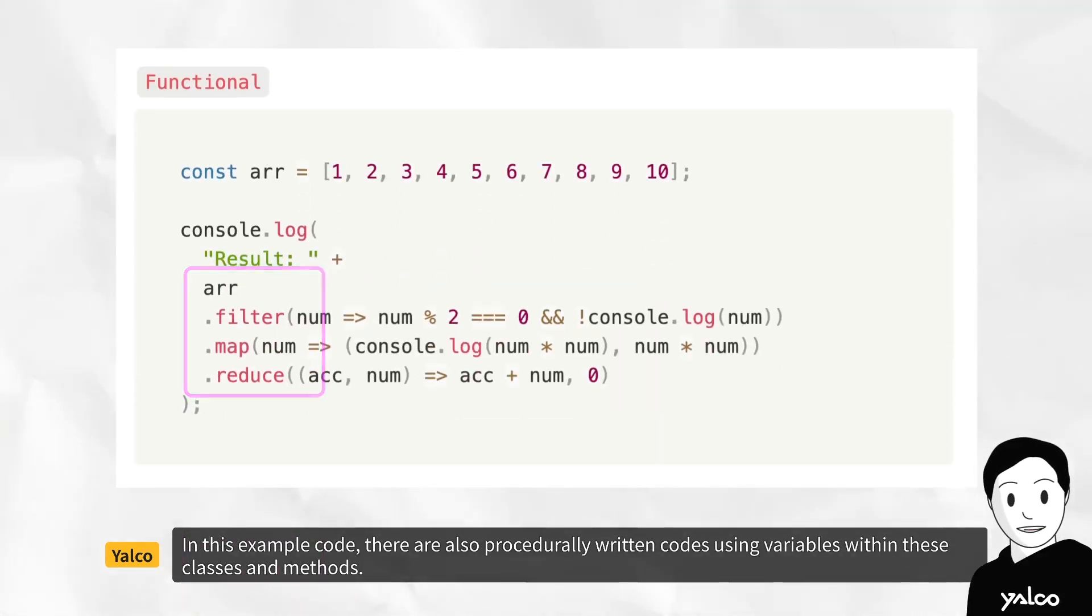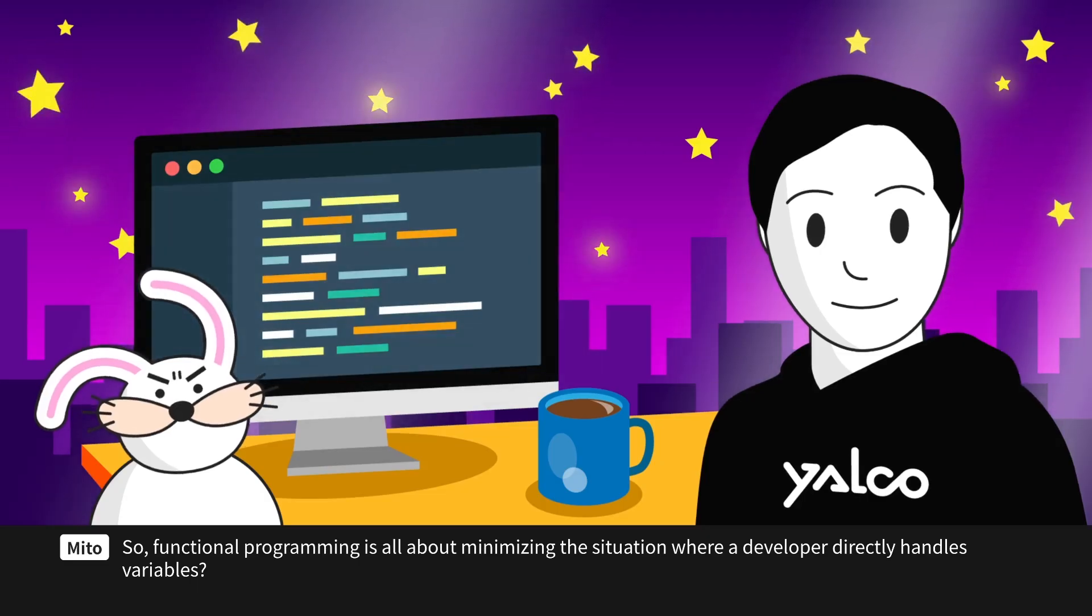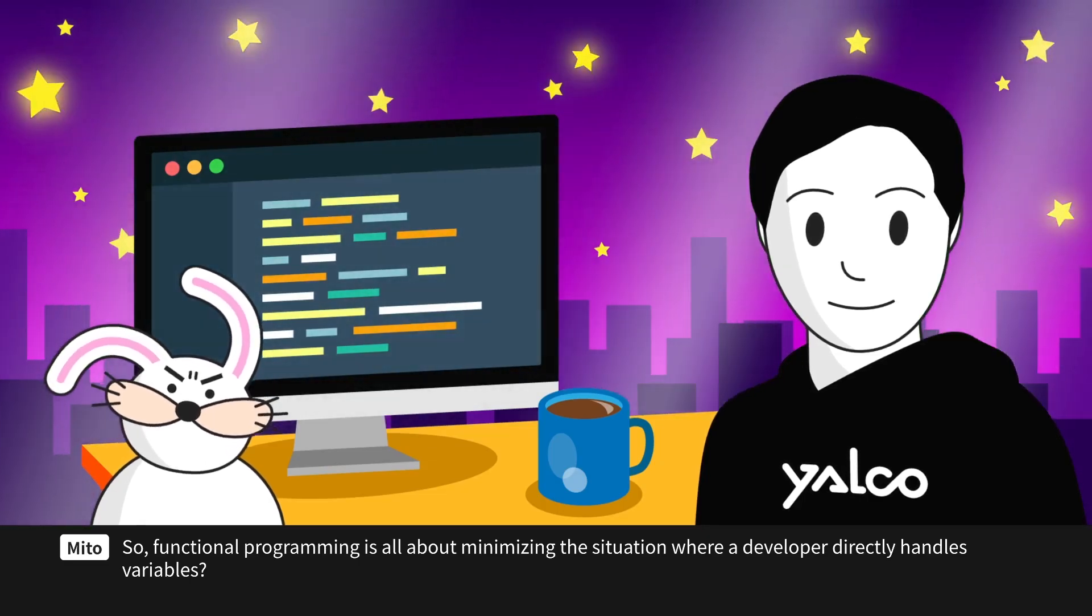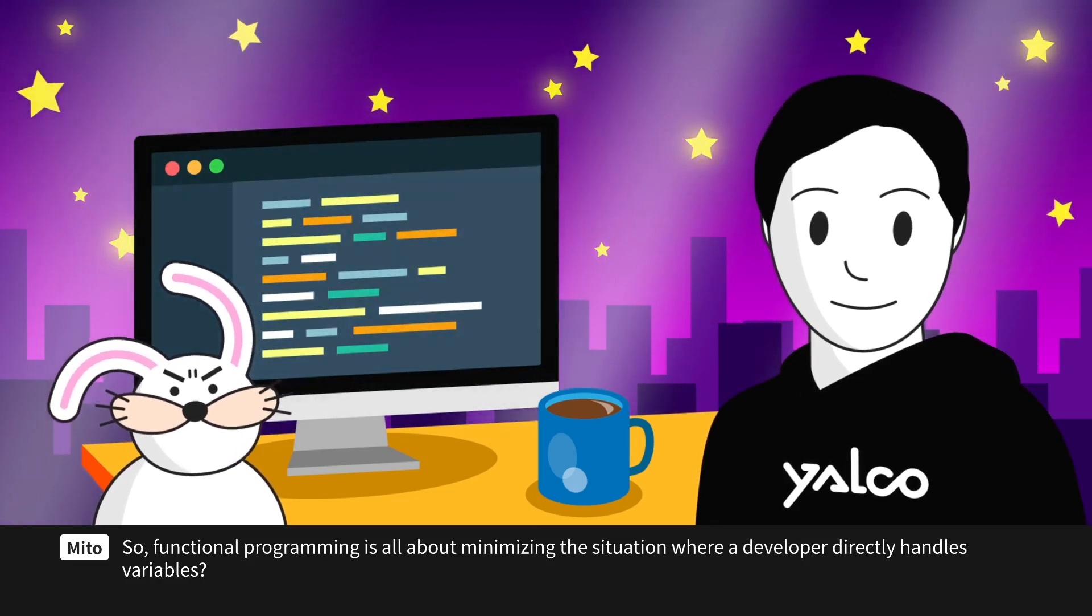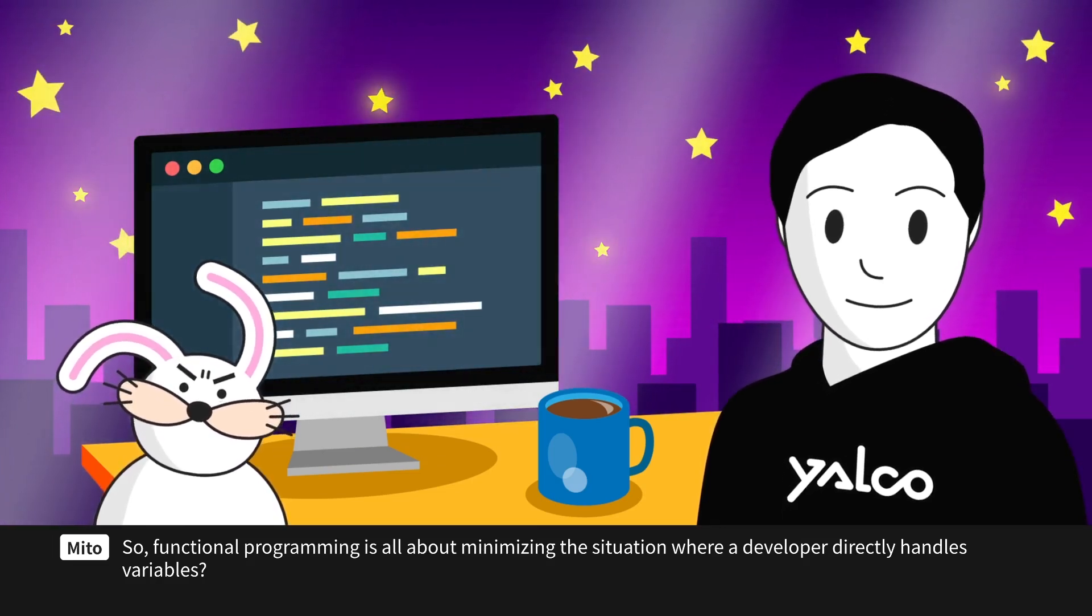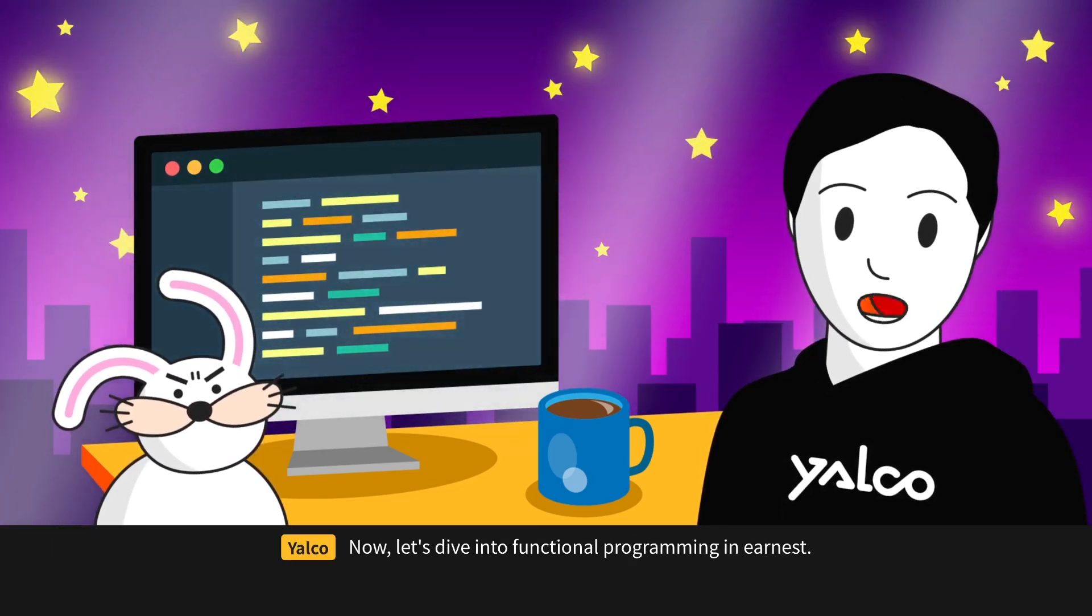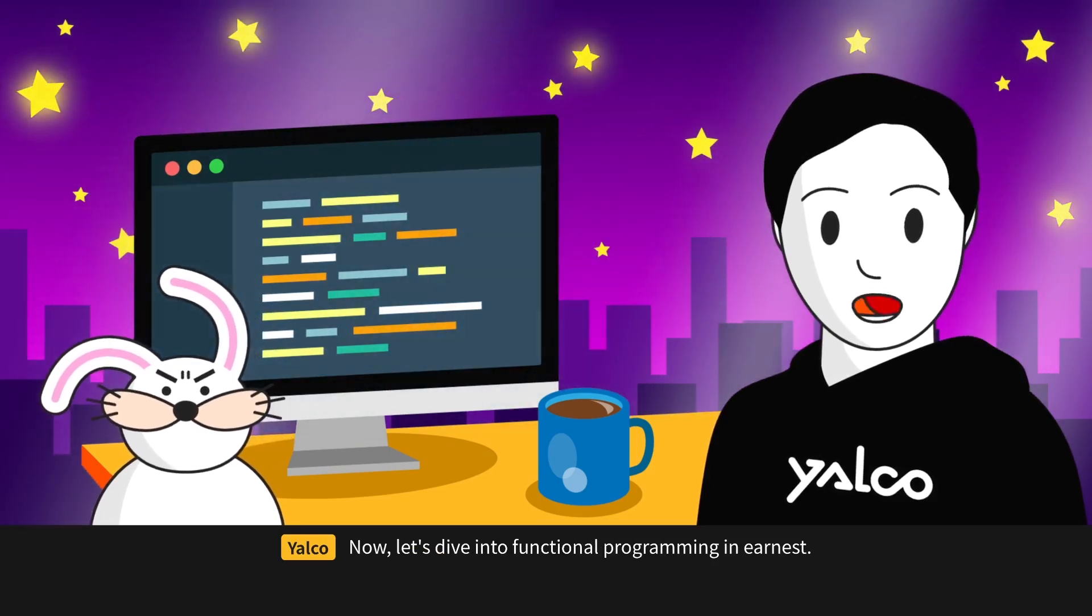In this example code, there are also procedurally written codes using variables within these classes and methods. So, functional programming is all about minimizing the situation where a developer directly handles variables? You can understand it that way. Now, let's dive into functional programming in earnest.